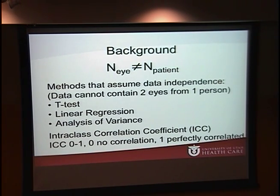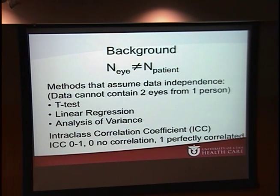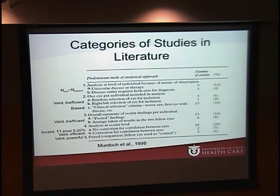Standard techniques that assume data independence — such as the t-test, linear regression, and analysis of variance — cannot be used when a dataset contains two eyes from one person. When the number of eyes does not equal the number of patients, it's important to assess the level of correlation between eyes. One of the most common methods is the intraclass correlation coefficient, or ICC, which ranges from zero (no correlation) to one (perfectly correlated). If this is not measured or understood, there is a high likelihood of using an inappropriate or inefficient technique.